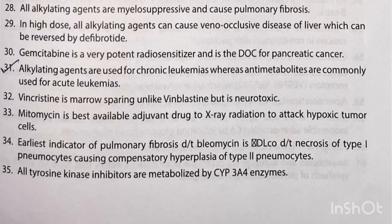In high doses, all alkylating agents can cause veno-occlusive disease of the liver, which can be reversed by defibrotide. Gemcitabine is a very potent radiosensitizer and is the drug of choice for pancreatic cancer. Alkylating agents are used for chronic leukemias, whereas antimetabolites are commonly used for acute leukemias. Vincristine is marrow-sparing unlike vinblastine, but is neurotoxic.